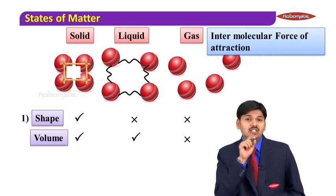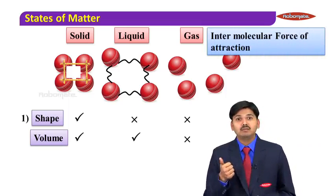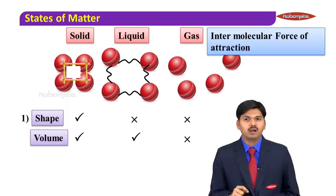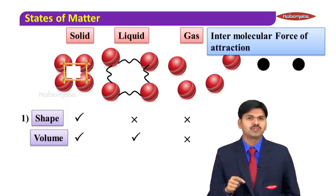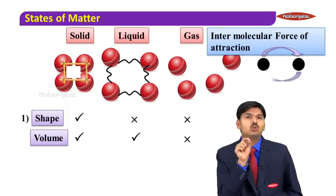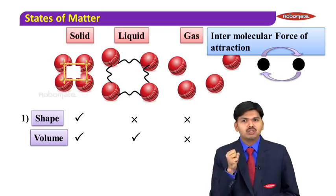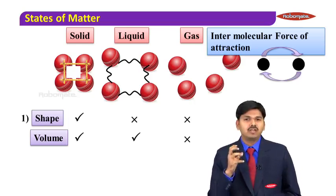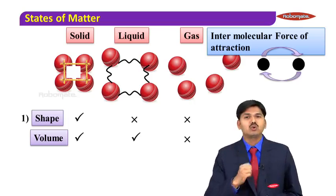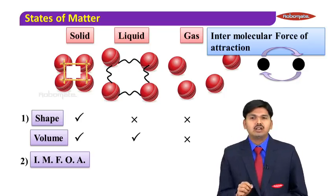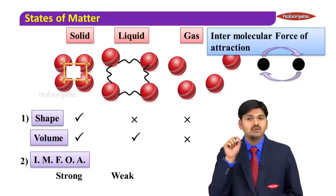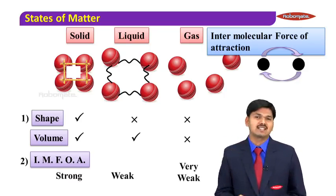Intermolecular force of attraction is very essential for these two parameters — shape and volume. What is intermolecular force of attraction? It is the attraction between two atoms. If it is very strong, it will have a solid shape. If it is very weak, then there is no shape and no volume. So the intermolecular force of attraction is very strong in solids, and very weak in liquids and gases.